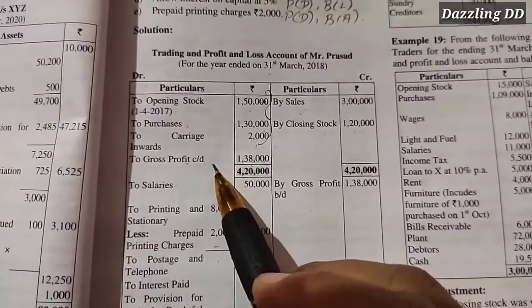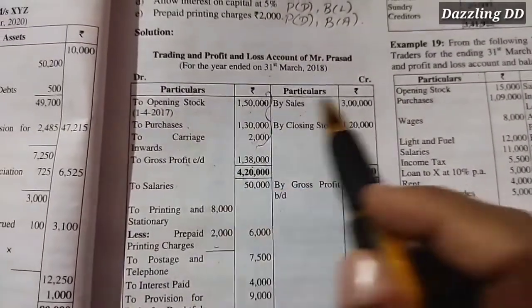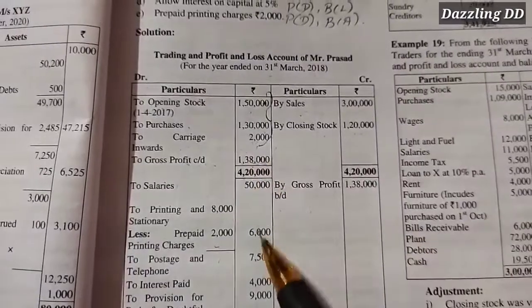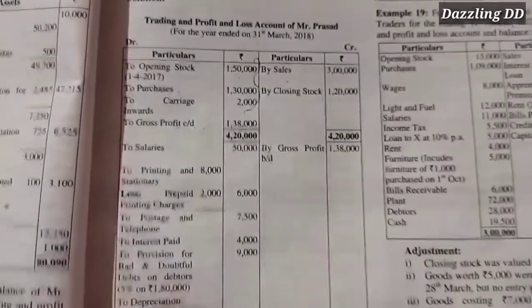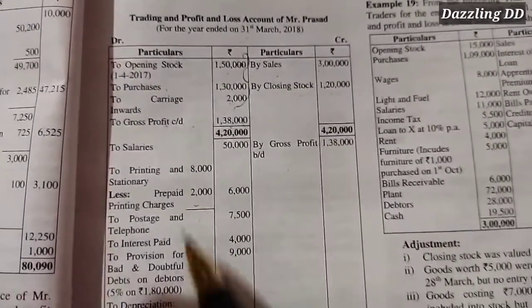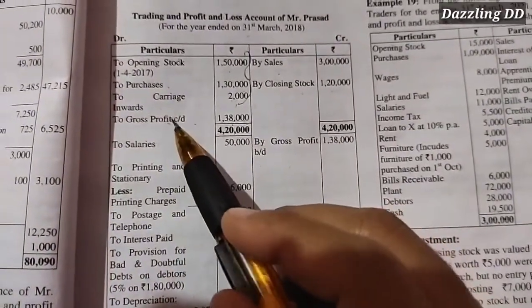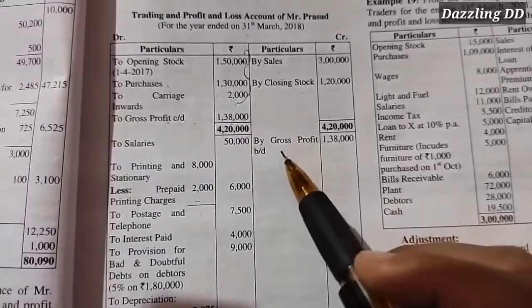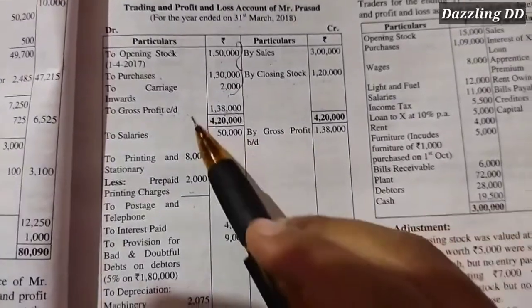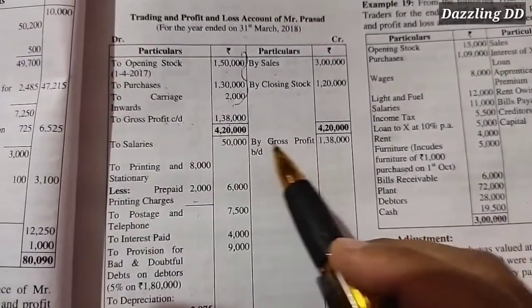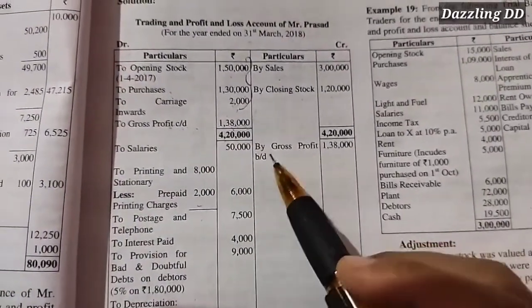This completes the trading account. Next is the profit and loss account. The gross profit is carried down to the credit side of the profit and loss account.